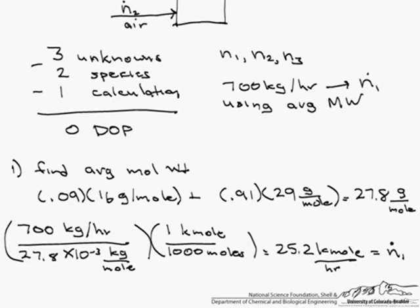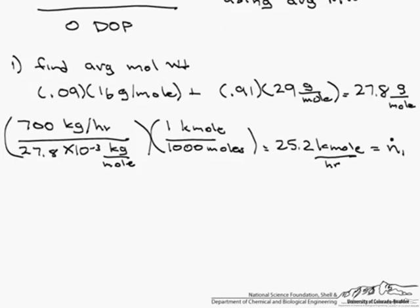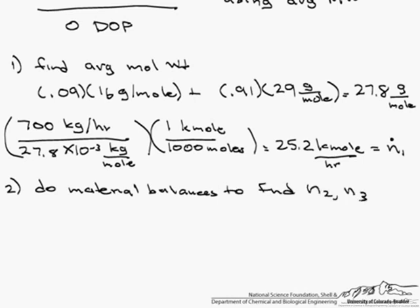Now that we have solved for N1, we can go ahead and do material balances in order to find N2 and N3. So we could do a methane and air balance, we can do an overall and methane balance, we can do an overall and air balance. Let's start by doing the overall balance.